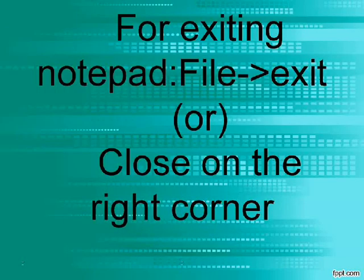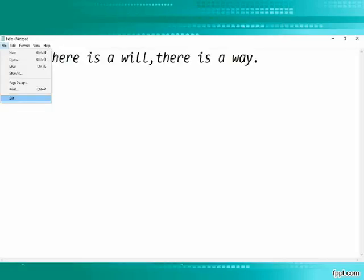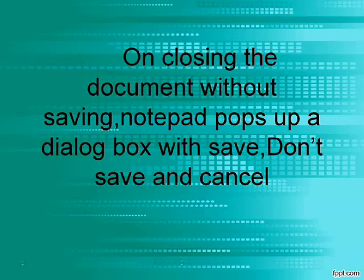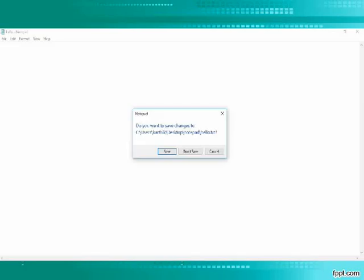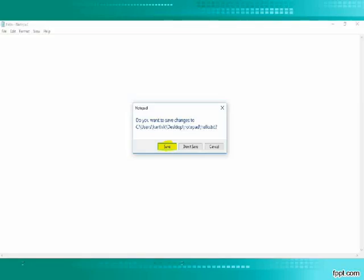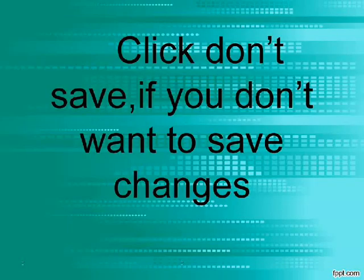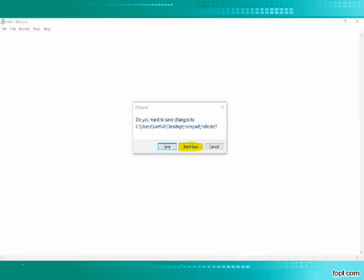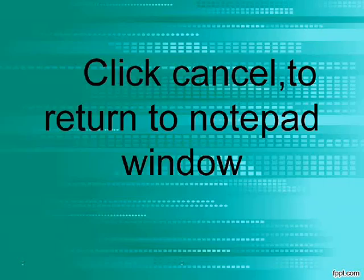For exiting Notepad: File, Exit, or click Close on the right corner. On closing the document without saving, Notepad pops up a dialog box with Save, Don't Save, and Cancel. Click Save to save changes to Notepad. Click Don't Save if you don't want to save changes.